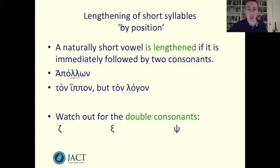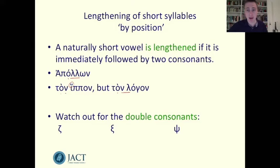The two consonants can also be in different words. Here the omicron in ton hippon is short because omicron is short by nature and it is followed by two consonants. By the way, a rough breathing is not a consonant. In ton logon, however, the omicron in ton hippon is again short by nature, like all omicrons, but here it is followed by two consonants and therefore we would scan the omicron as being long.